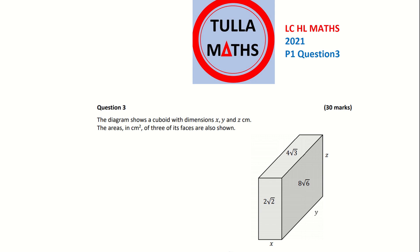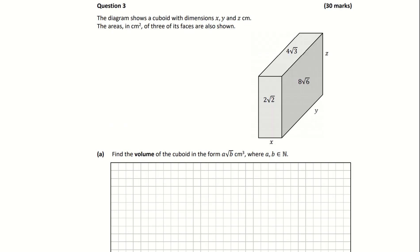This is a sample answer to question 3 on paper 1 of the 2021 Leaving Cert Maths paper. In question 3 it gave us a diagram of a cuboid with dimensions x multiplied by y multiplied by z.